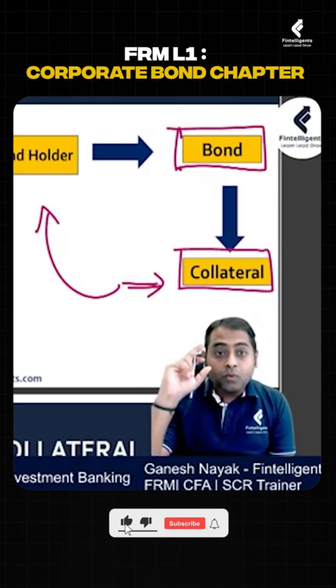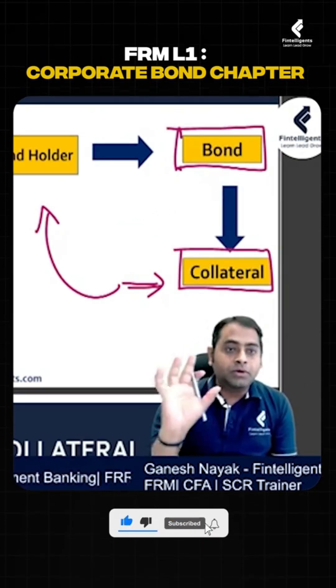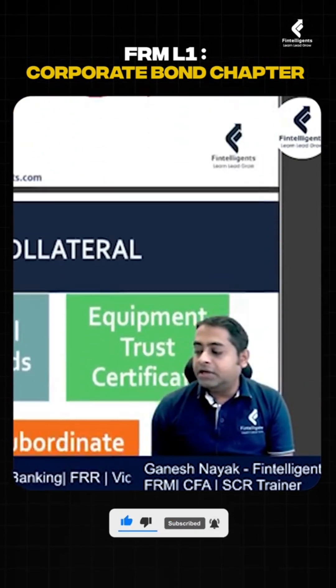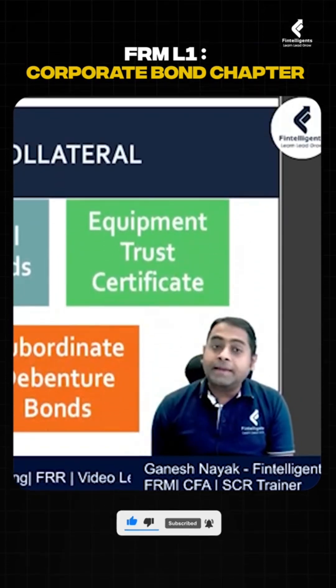Now why did I explain you about this? Because there are 3 to 4 important types of bond.